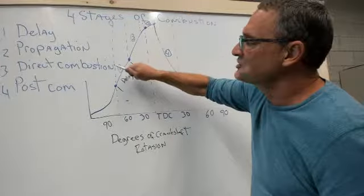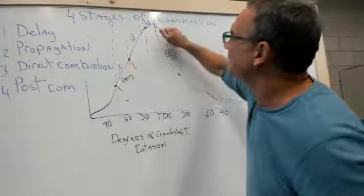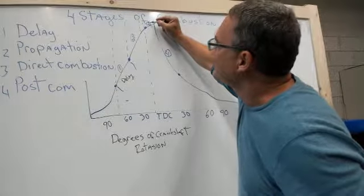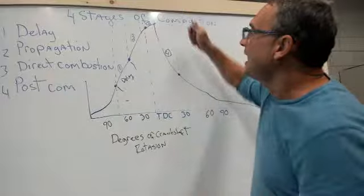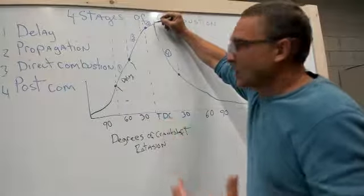And when a complete flashover happens, it's called direct combustion. And that's up here at three. So direct combustion happens. It explodes very quickly, and then the power drops off.